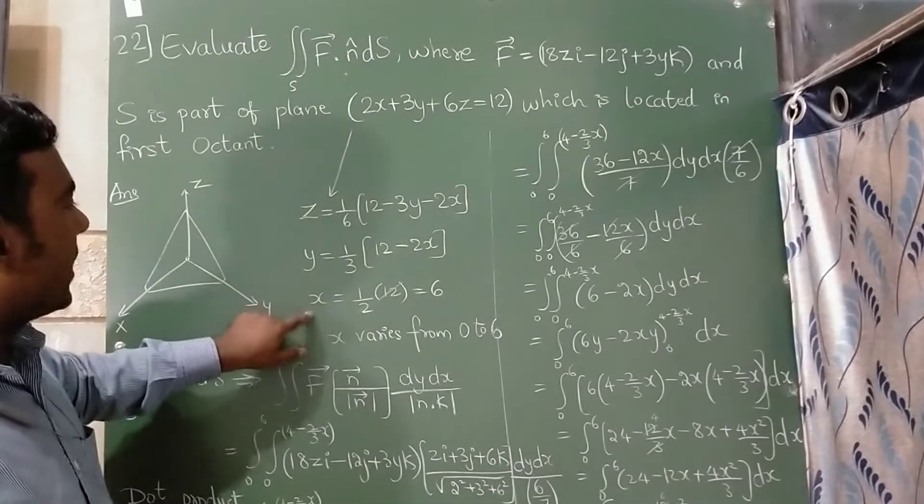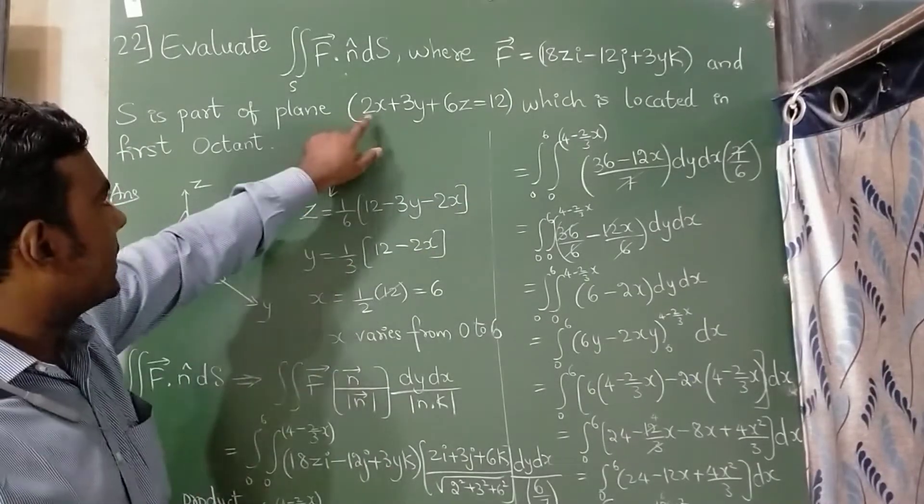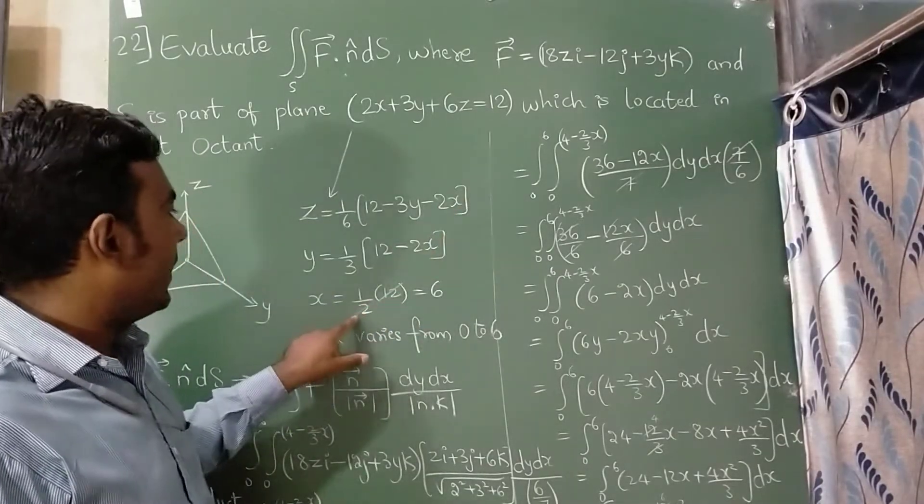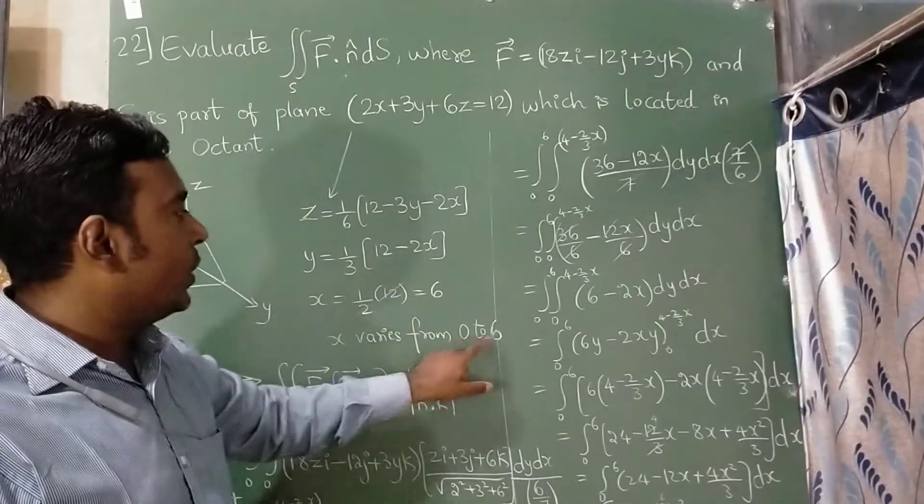Now last one is x. When I am considering x, y and z are 0. So since the coefficient is 2, I have taken 1 by 2. What is here? 12. So 12 divided by 2 is 6. Now x varies from 0 to 6.